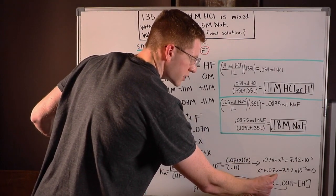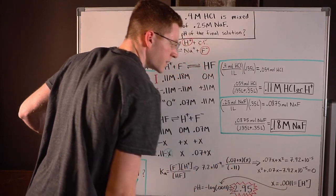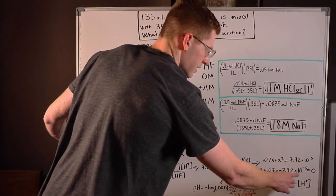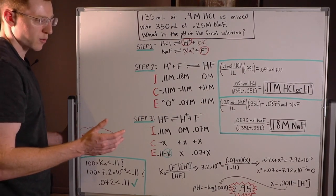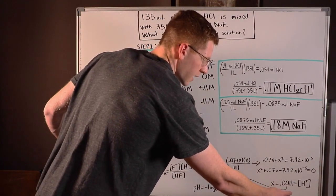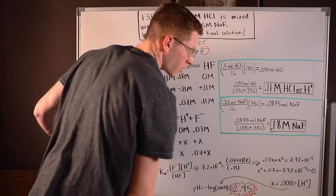And you actually have to employ the quadratic formula to solve for this. So your A would be one, your B would be 0.07, and your C would be negative 7.92 times 10 to the negative five. You'll end up with two answers from the quadratic formula. One will be negative, and one will be 0.0011.